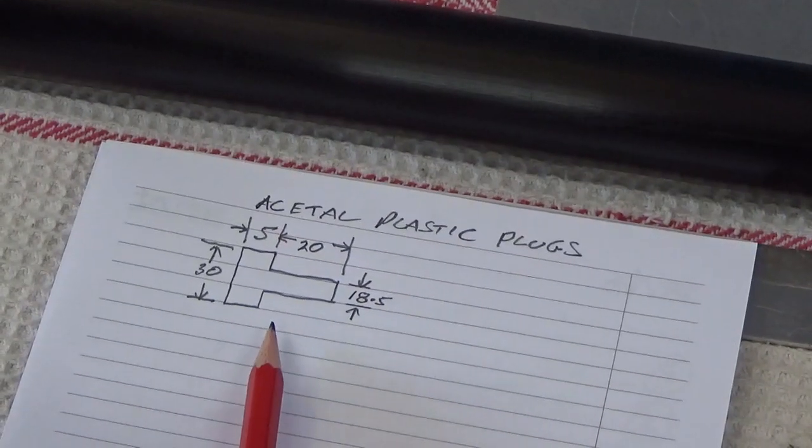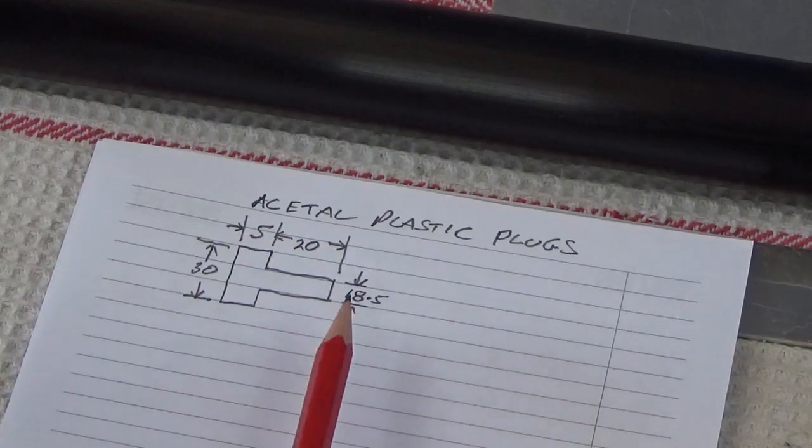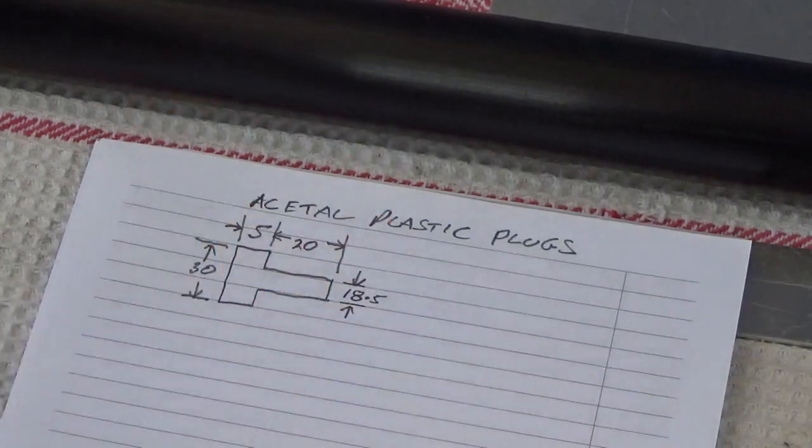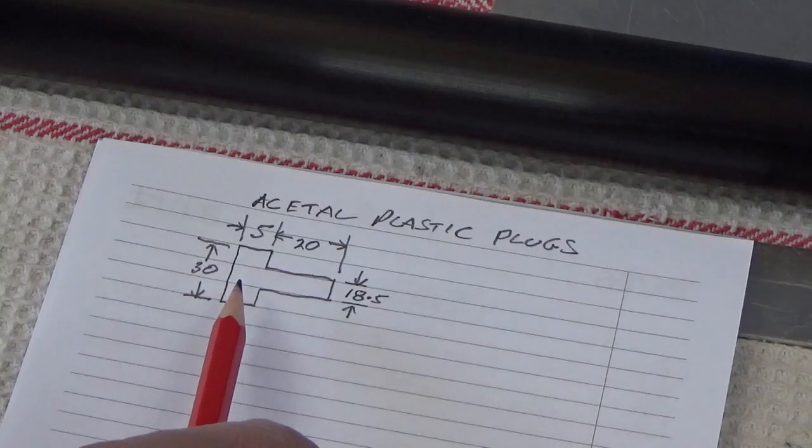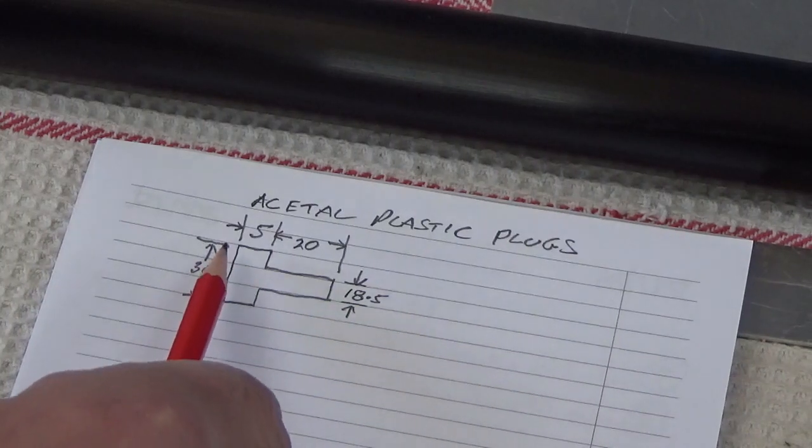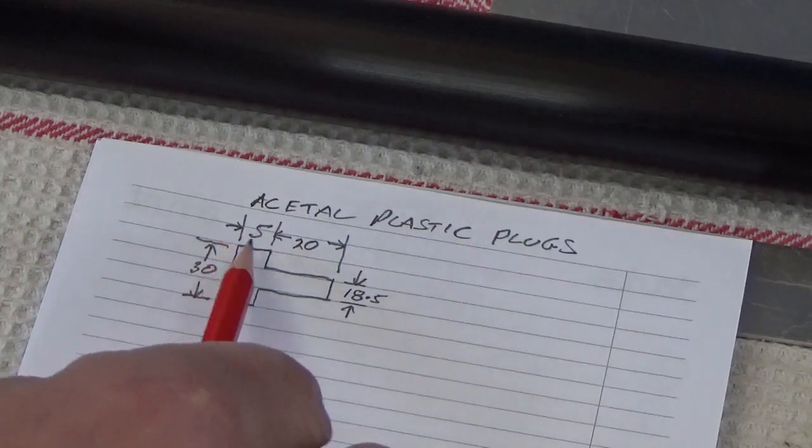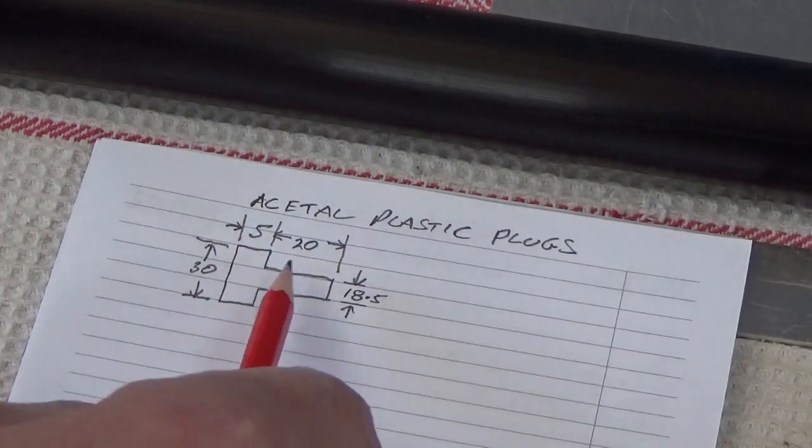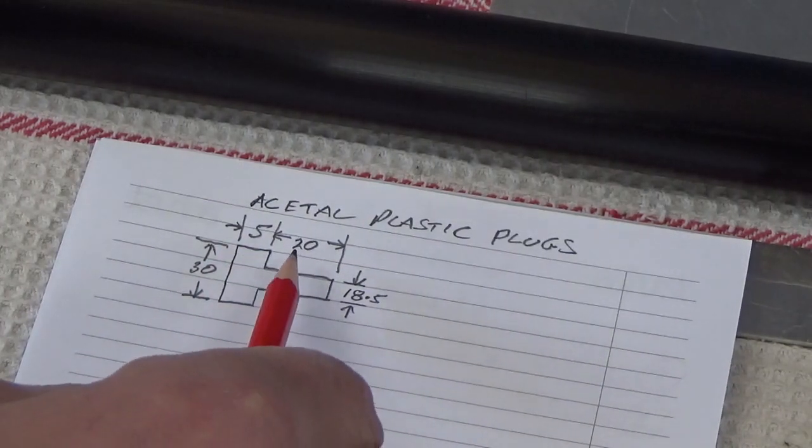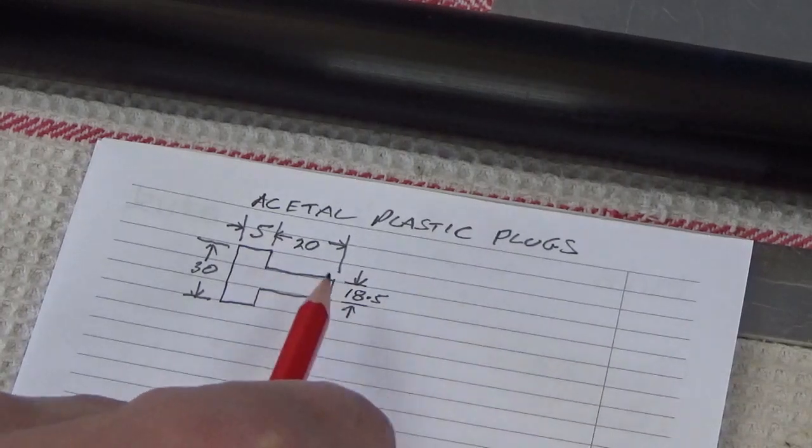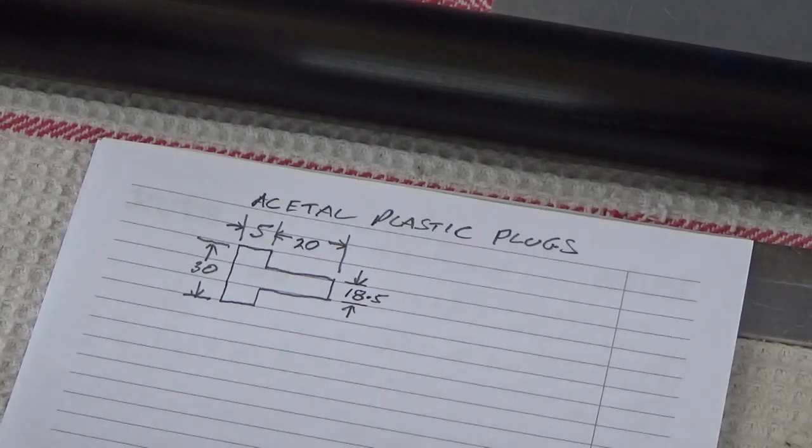Alright, so just working out the dimensions for the plugs now. These will be made out of recyclable plastic, and you can see the dimensions there. The outside is 30 millimeter, we're going to have a top of 5 millimeter, the internal length is 20, and the internal diameter of the bore about 18.5.